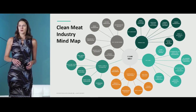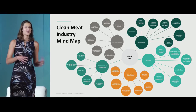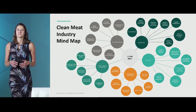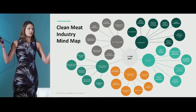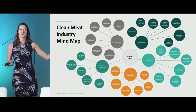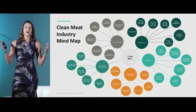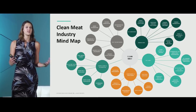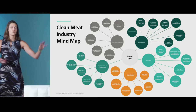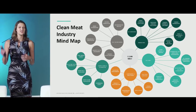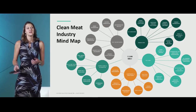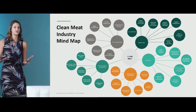Here is our clean meat industry mind map, which many of you may have seen through our white paper. It points out some of the technology development areas critical to bringing clean meat to commercial fruition. We have supply chain and distribution on there so we don't lose sight of the fact that we'll need to build or adapt existing supply chains. I'll focus on the other four categories: cell lines, cell culture media, scaffolding, and the bioreactors which house the entire process.